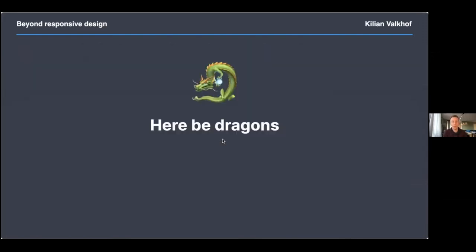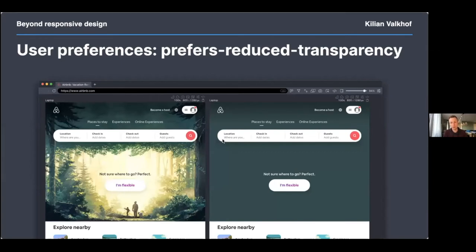For the next few media queries, they have either no support or work in only a few browsers. First up is prefers-reduced-transparency. Users can indicate they want text on a solid background, usually due to visual impairments making it hard to read text on patterned or noisy backgrounds, but it can also help people with dyslexia or concentration problems because there's less going on around the text. Unfortunately, there is no browser support yet at all.